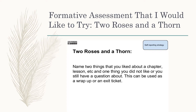A formative assessment I would like to try is called Two Roses and a Thorn. This is where you name two things that you liked about a chapter or a lesson, and one thing you did not like or still have a question about something you didn't understand. It can be used as a wrap-up or an exit ticket.